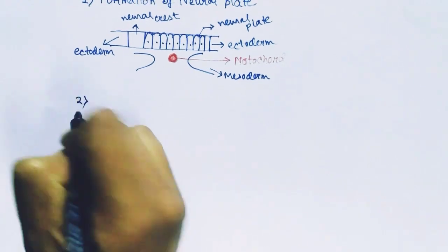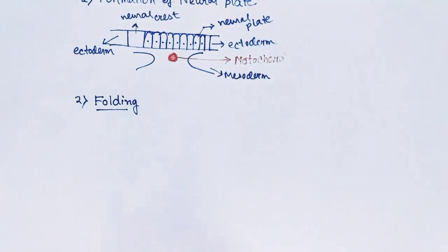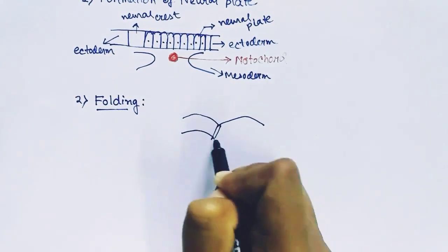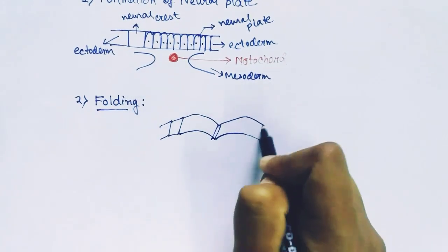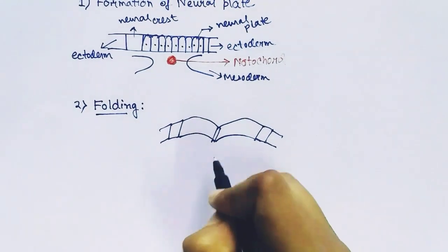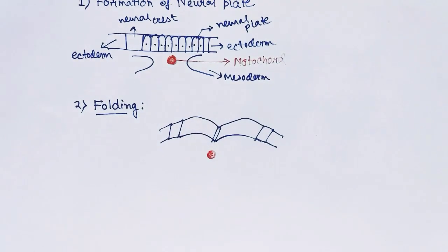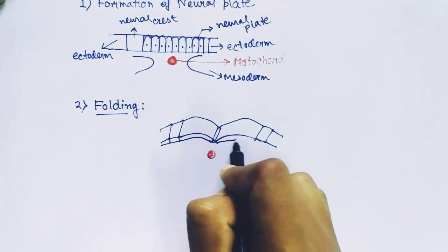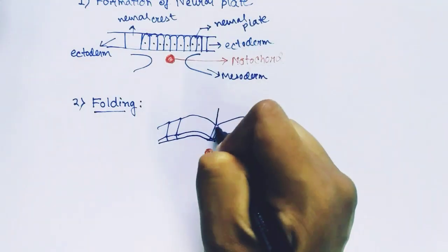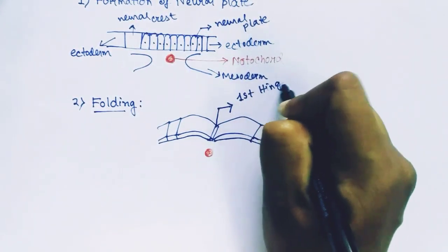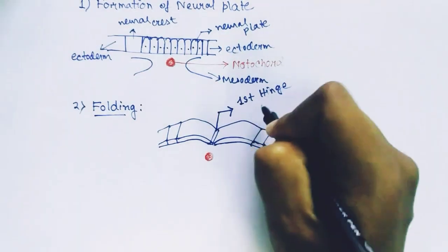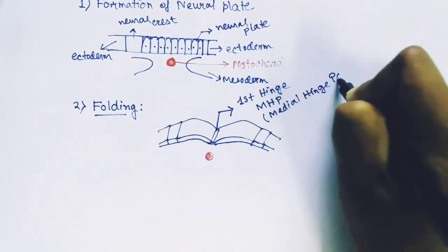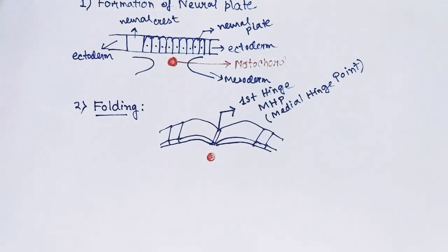After the formation of the neural plate, the second process is folding. By the induction of the notochord, a hinge will form between the neural plate, which will fold the neural plate and keep it uplifted. This is the first hinge formed, called MHP or medial hinge point.